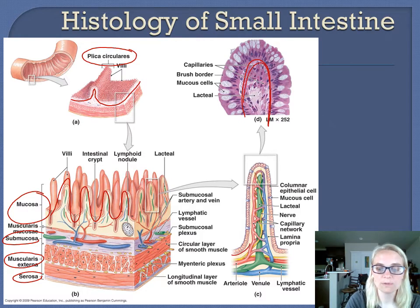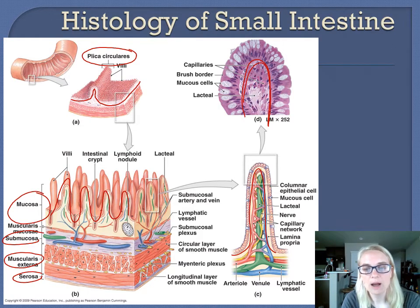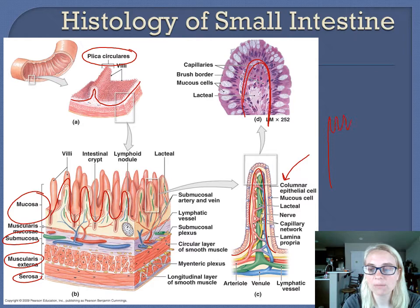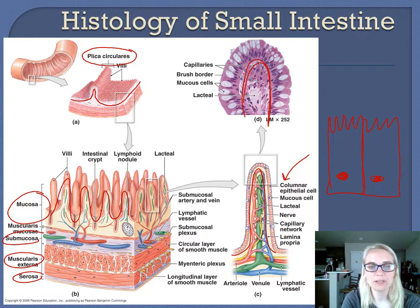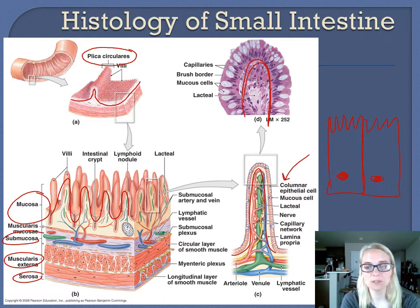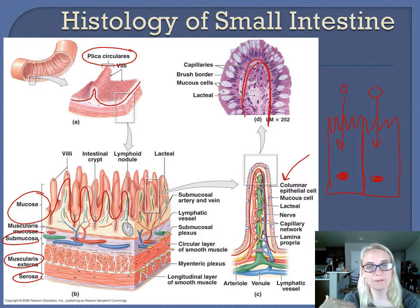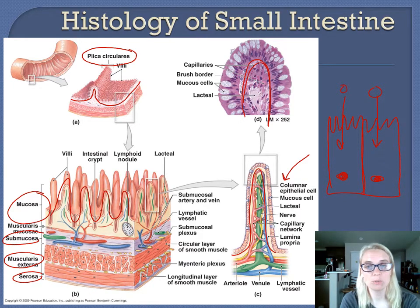Each villus can be seen in the micrograph as one finger-like projection. On the folds we have another fold — folds upon folds. These columnar epithelial cells also have microvilli on their surface. So you have circular folds, you have villi, and you have microvilli. This increases surface area because it is across these plasma membranes where nutrients are carried into the bloodstream — the more plasma membrane surface we have, the more efficient we are at absorbing nutrients.